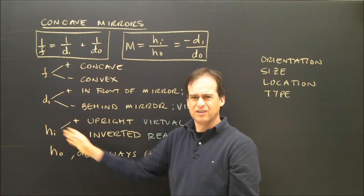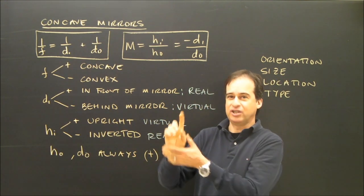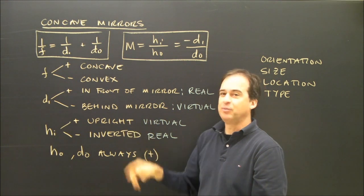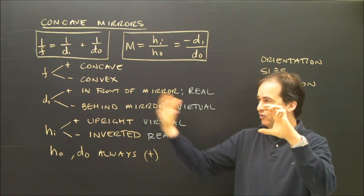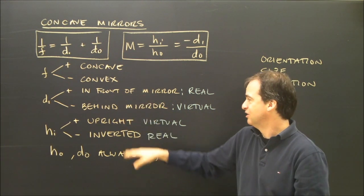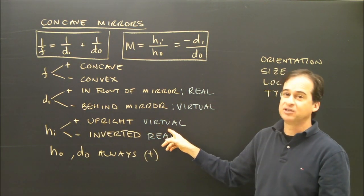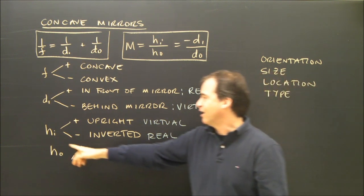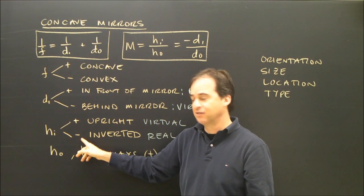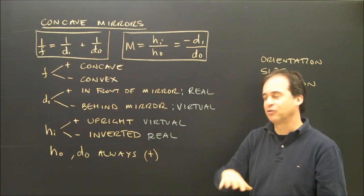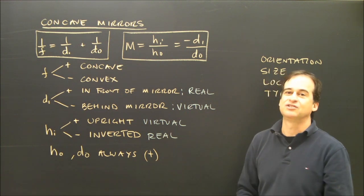HI, height of the image. This makes a lot of sense. If the image is upright, we call it positive. So if I have a candle here and I look at the image and it's the same orientation, it's upright, HI should have come out to be positive. And that also tells me it's virtual. Height of image, if it comes out to be negative in my calculation, it means it's upside down or inverted. And that actually means it's real.